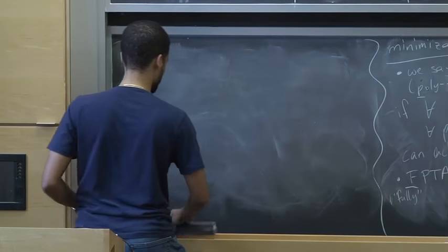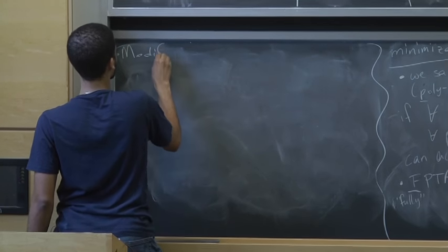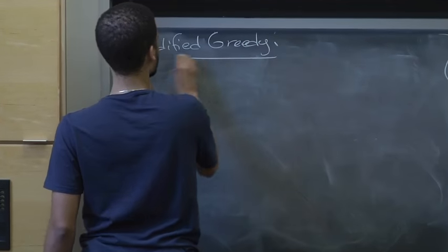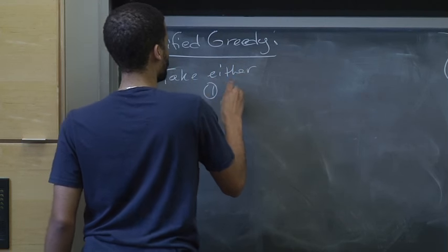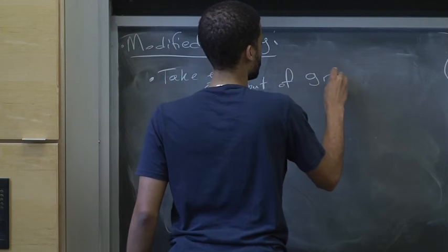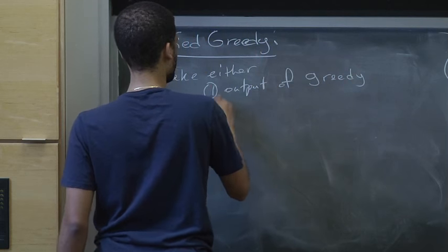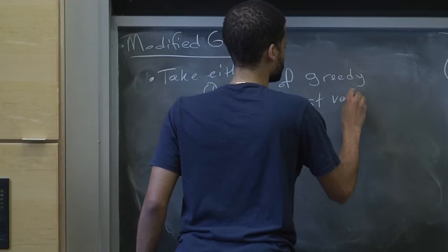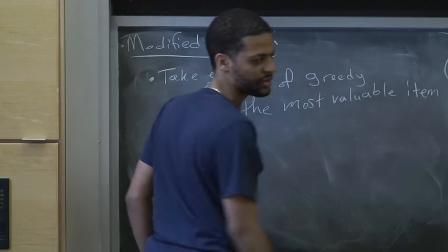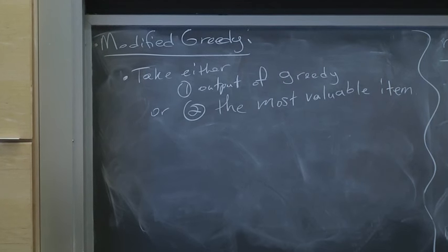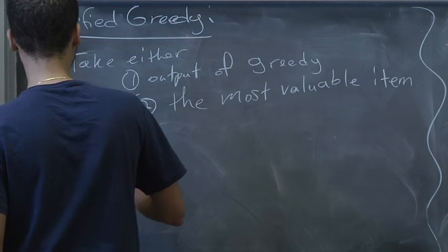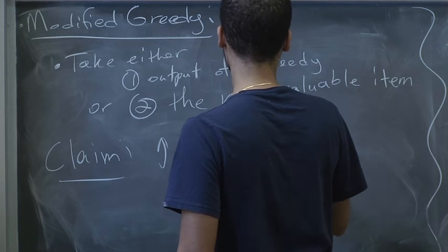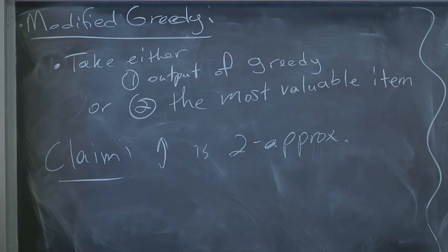Here's a modified greedy algorithm that does pretty well: take either (1) the output of greedy, or (2) the most valuable item. The claim is that this algorithm is a 2-approximation.